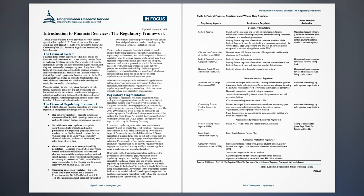The Financial System. Financial firms match the available funds of savers and investors with borrowers and others seeking to raise funds in exchange for future payouts. The products, instruments, and markets used to facilitate this matching are myriad, and they are overseen by a complex system of regulators. The financial system is often divided into banking, insurance, and securities markets.